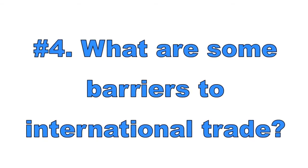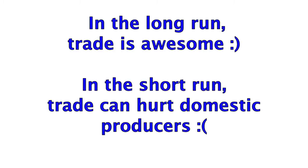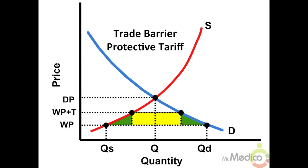Number four: what are some barriers to international trade? In the long run, the gains from international trade are greater than the losses. In the short run, trade can hurt domestic producers and cause domestic unemployment, which can lead to the implementation of trade barriers by policymakers. One type of trade barrier is a tariff — a protectionist tool that taxes imports — which raises the cost of foreign goods to keep domestic industries alive, though higher prices hurt consumers.